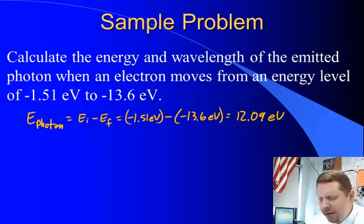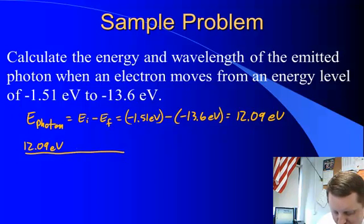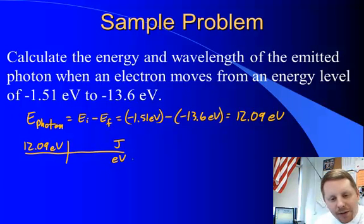In order to calculate its wavelength though, we really need to understand what its energy is in our standard units of energy, joules. So let's practice converting our 12.09 electron volts into joules. If I have electron volts and I want joules, I'll put joules in the denominator and electron volts in the denominator on the right-hand side.